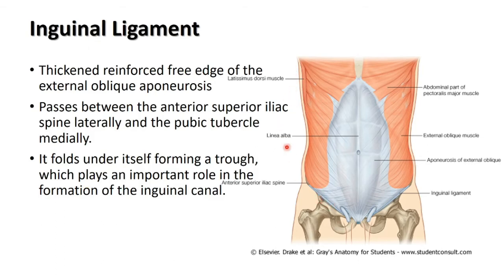The anterior lateral abdominal wall is made up of three muscles arranged in layers: superficially the external oblique, below that the internal oblique, and deeper the transverse abdominis — going from the outer side to the inner side.